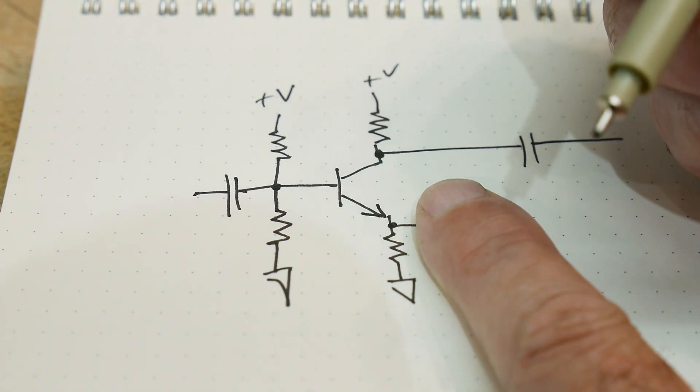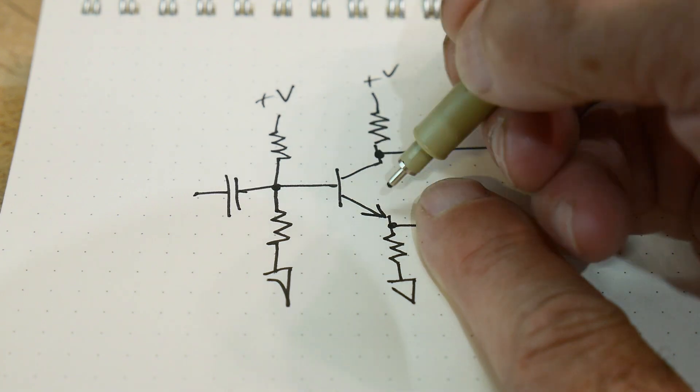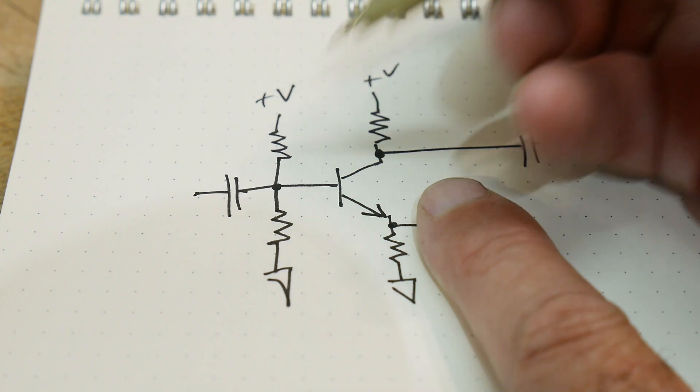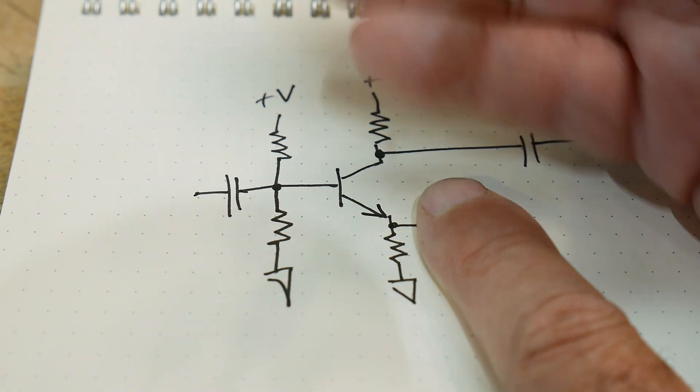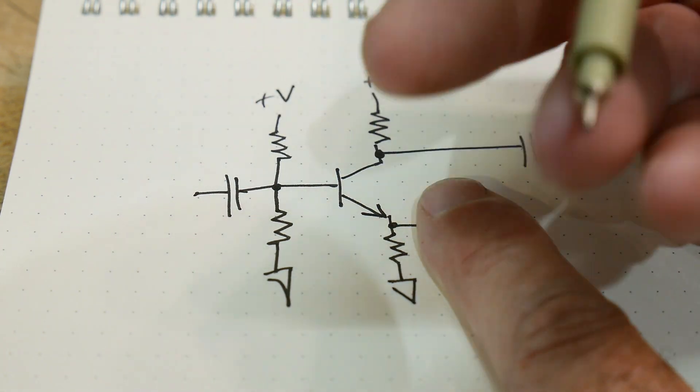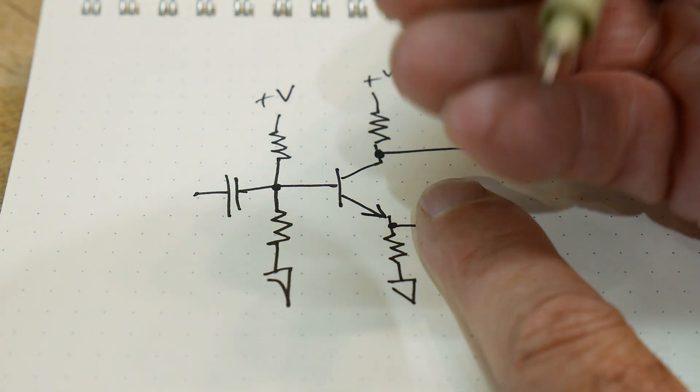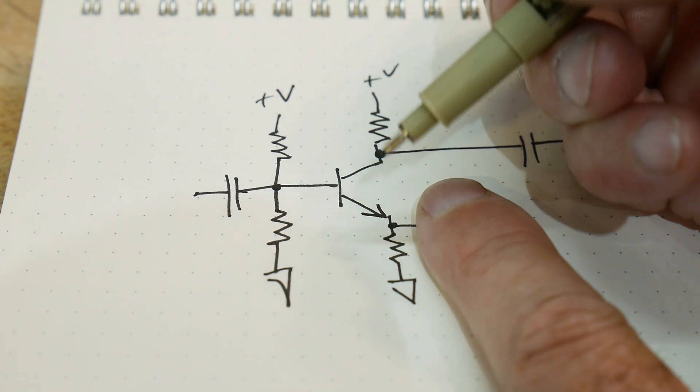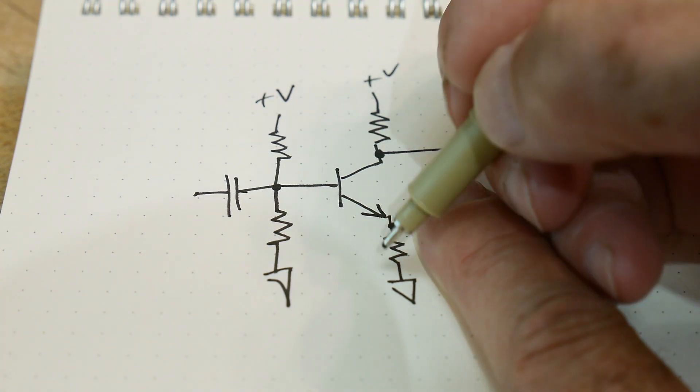Typically in these little small signal circuits, it's around 25 ohms, but it can vary. It can vary for all sorts of different reasons. And so that variation can cause your signals to not have the right gain or to not work right. So you want to put in a circuit that is not reliant on this emitter. And you do that by adding a resistor.